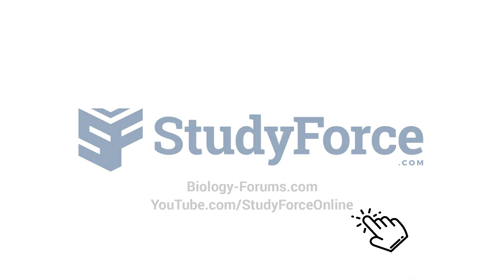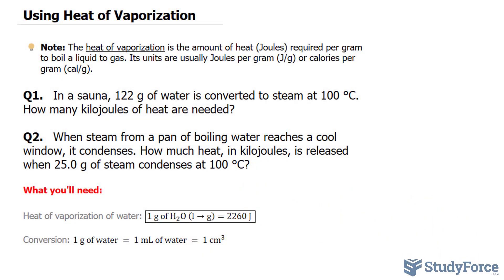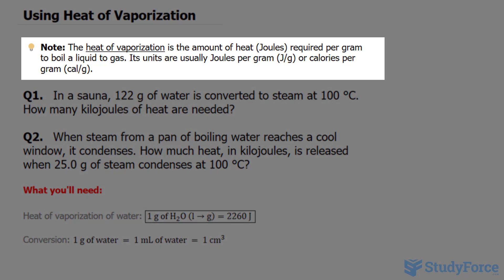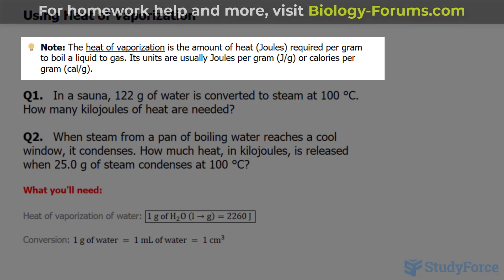In this lesson, we'll discuss heat of vaporization and answer two questions based on it. The heat of vaporization is the amount of heat required per gram to boil a liquid to gas. Its units are usually written in joules per gram or calories per gram.